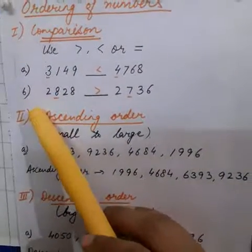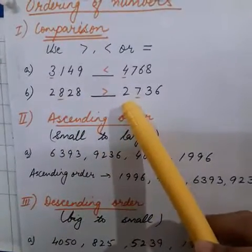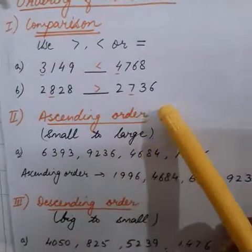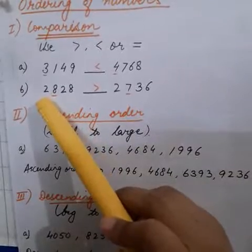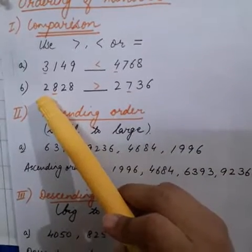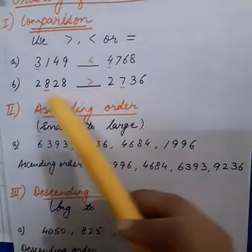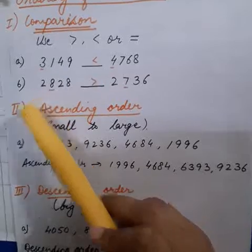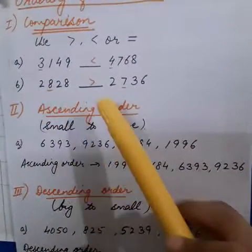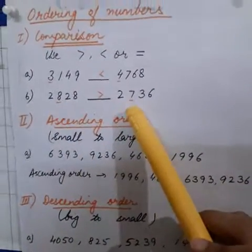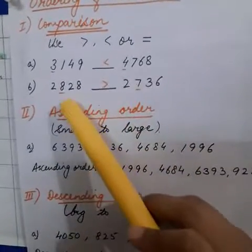Let's move to the second example: 2828 and 2736. First step, we will compare the digits which are at the 1000's place — both are 2. Since they are both the same, we will move to the next digit. The next digit is 8 and 7. Since they are both different, so we will compare them.